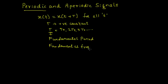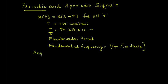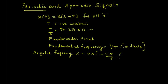The reciprocal of the fundamental period is known as the fundamental frequency, which equals one over T, measured in units of hertz. Fundamental frequency tells how frequently the signal repeats itself. We also have another parameter known as angular frequency, represented using the letter omega, which equals two pi times f, or two pi divided by T, measured in radians per second.